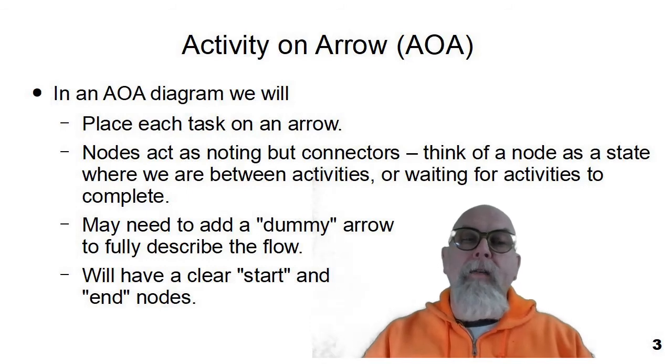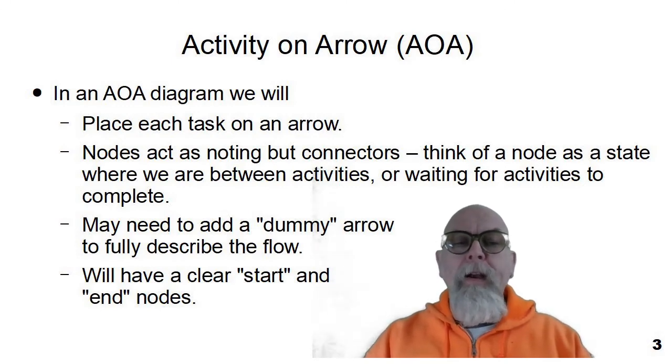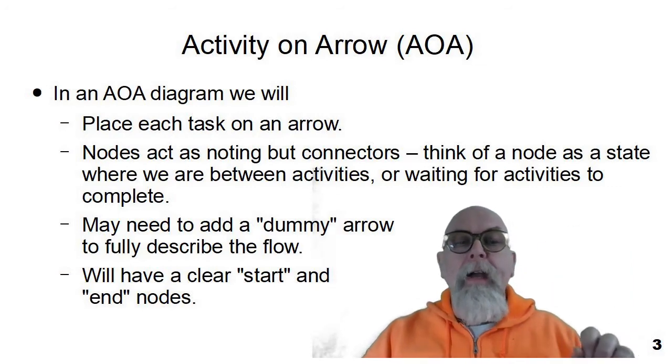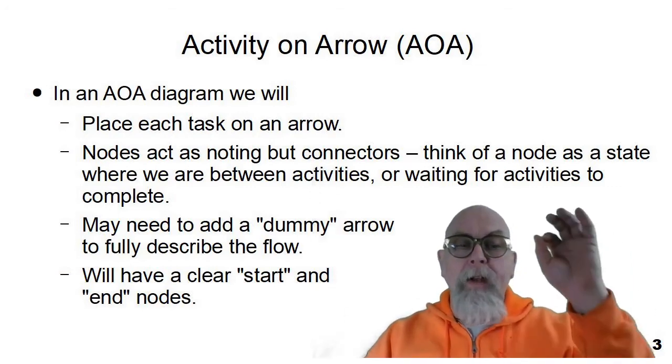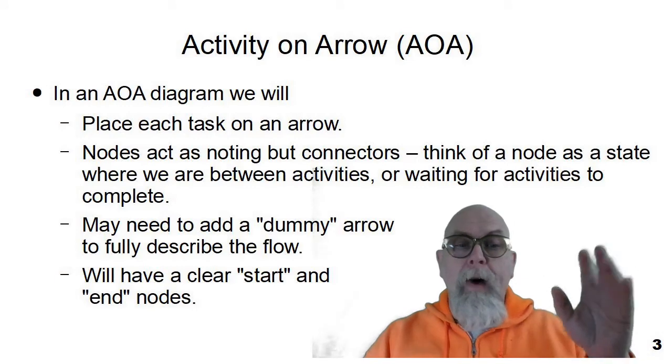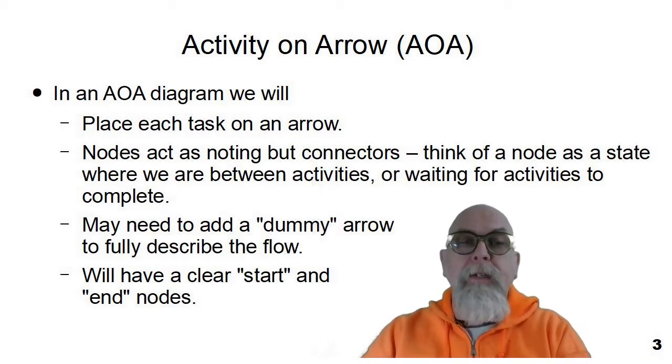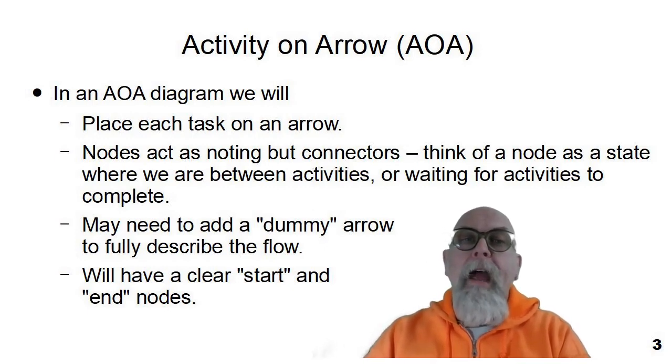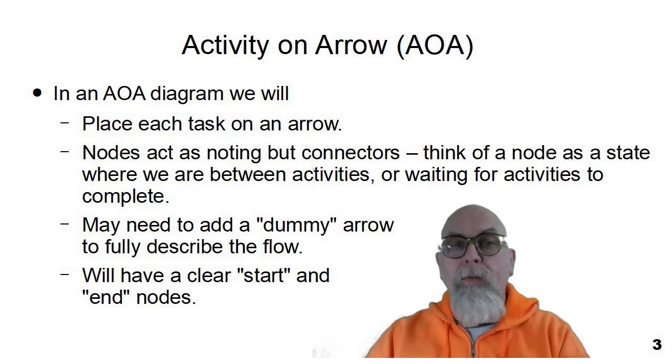Activity on arrow diagrams, network diagrams, are different than activity on node diagrams in the way that the activity is actually designated in the diagram. In an AOA diagram, activity on arrow diagram, the activity happens on the arrow, and the nodes are just places to wait until all of the arrows arrive.